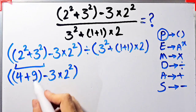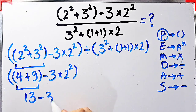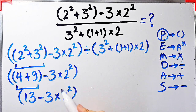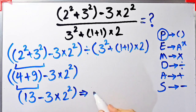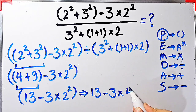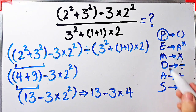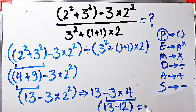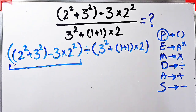Now we have subtraction, multiplication, and exponent. First we simplify the exponent: 2² equals 4. Now we have 13 − 3 × 4. We do the multiplication first because it has higher priority than subtraction: −3 × 4 equals −12. Now inside the parentheses we have 13 − 12, which equals 1. The final answer of the first parentheses equals 1.